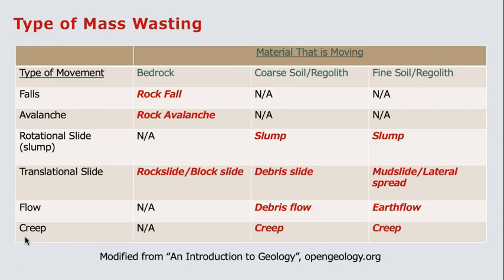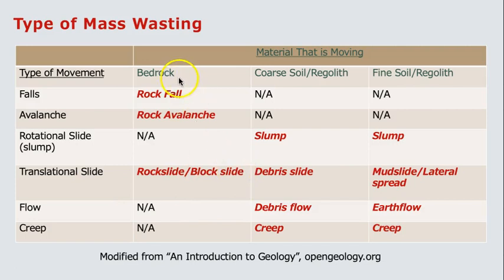No one dies from creep, although a slowly moving slope can be very destructive to structures built upon it. The specific names of mass wasting events: for falls, we have rock falls, avalanches, and rock avalanches. For rotational slides, we call them slumps, whether they are made up of coarse or fine regolith and soil. For translational slides, if the material is solid rock, we call it a rock slide or block slide; if it's coarse regolith and soil, it's a debris slide; for finer material, a mudslide or lateral spread. Flows can be debris flows if the material is both muddy and coarse, or earth flows if it's all fine material. Creep is simply creep.